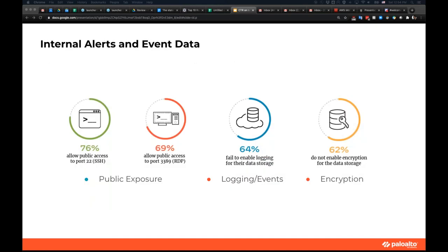The data pulled from our internal database from Palo Alto Networks' internal service showed almost the same kinds of misconfiguration patterns as the public dataset. Interestingly, 70 to 76% of clients had at least one SSH service exposed to the entire internet. The same logging and eventing issues and the same encryption-at-rest issues were identified in the internal data as well.